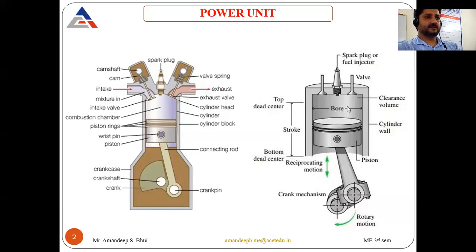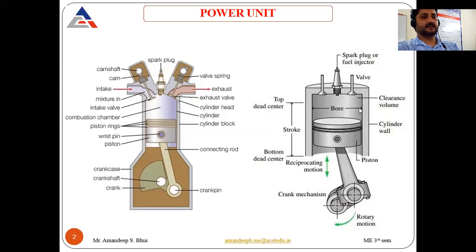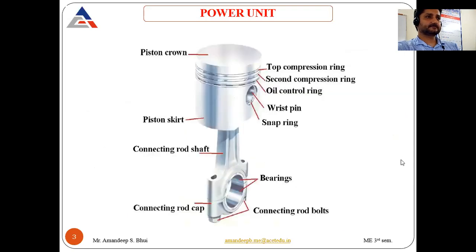Key IC engine terminology includes: Top Dead Center (TDC) — the topmost position the piston can reach; Bottom Dead Center (BDC) — the bottommost position inside the cylinder. The distance between TDC and BDC is the stroke length, denoted by L. The bore (D) is the internal diameter of the cylinder. Clearance volume is the volume between the cylinder head and TDC. The volume between TDC and BDC is called the swept volume.